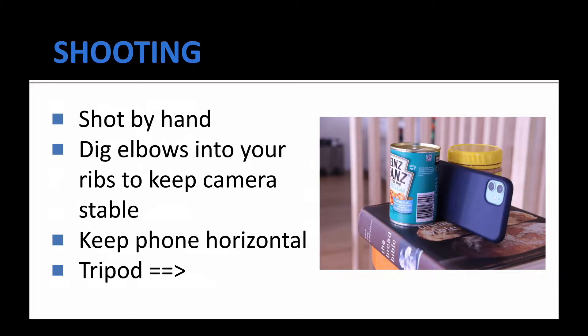Just a couple of tips when shooting with your phone: make sure you dig your elbows into your ribs and keep your camera nice and stable. Keep your phone horizontal — we're shooting in landscape mode, not portrait. And this is my tripod: a stool with a couple of flat books balanced on top and a jar of peanut butter and a tin of baked beans to prop up my phone. You don't need a real tripod.